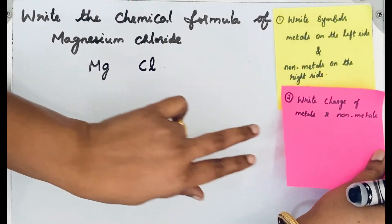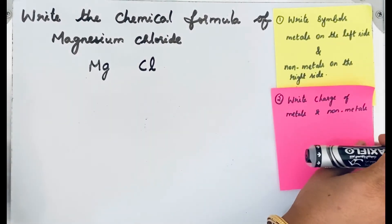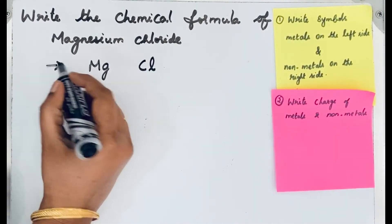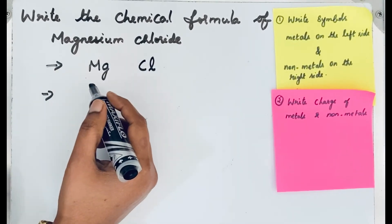Because this compound is an ionic compound, we are going to write the charge. This is the first step. Then for the second step, we write the charge. How do we know the charge of magnesium and chloride ion?